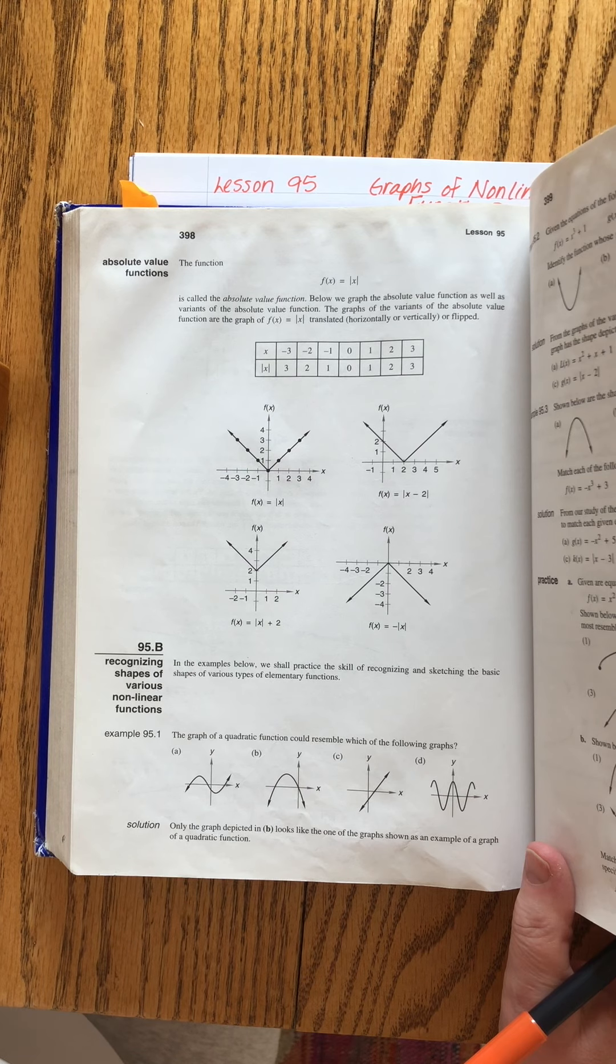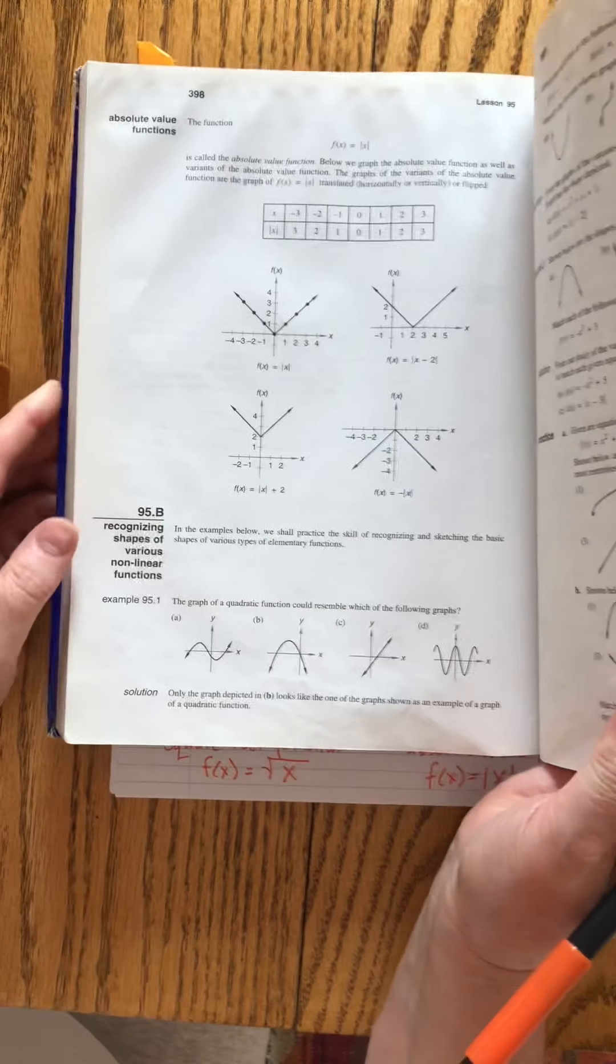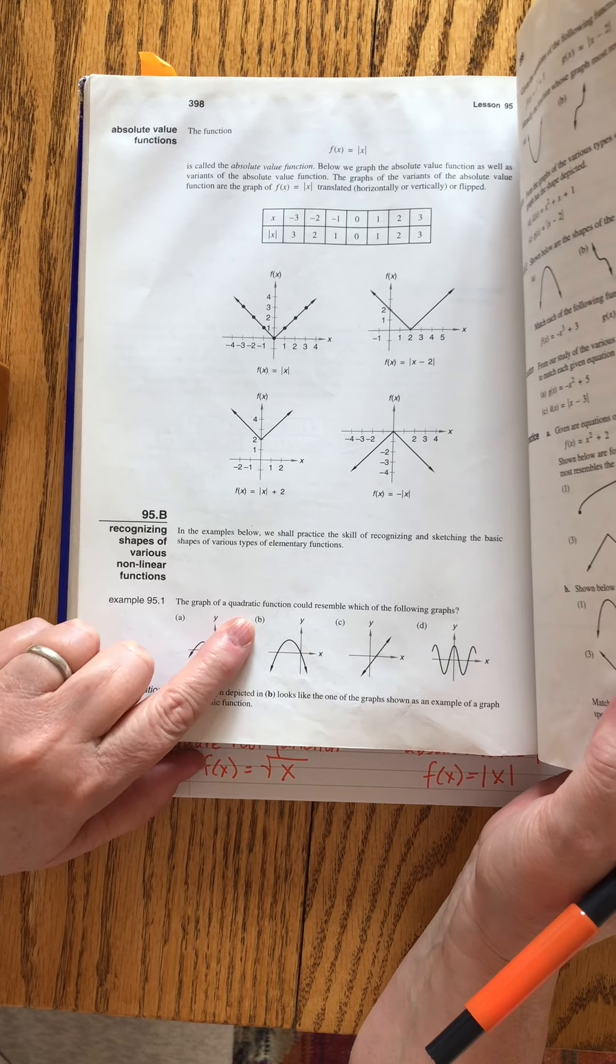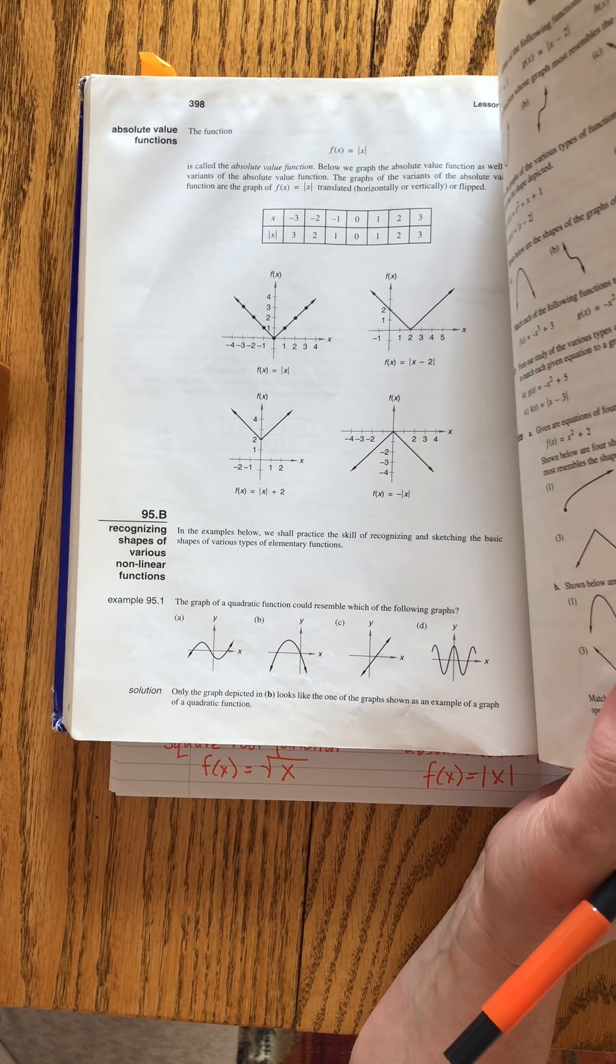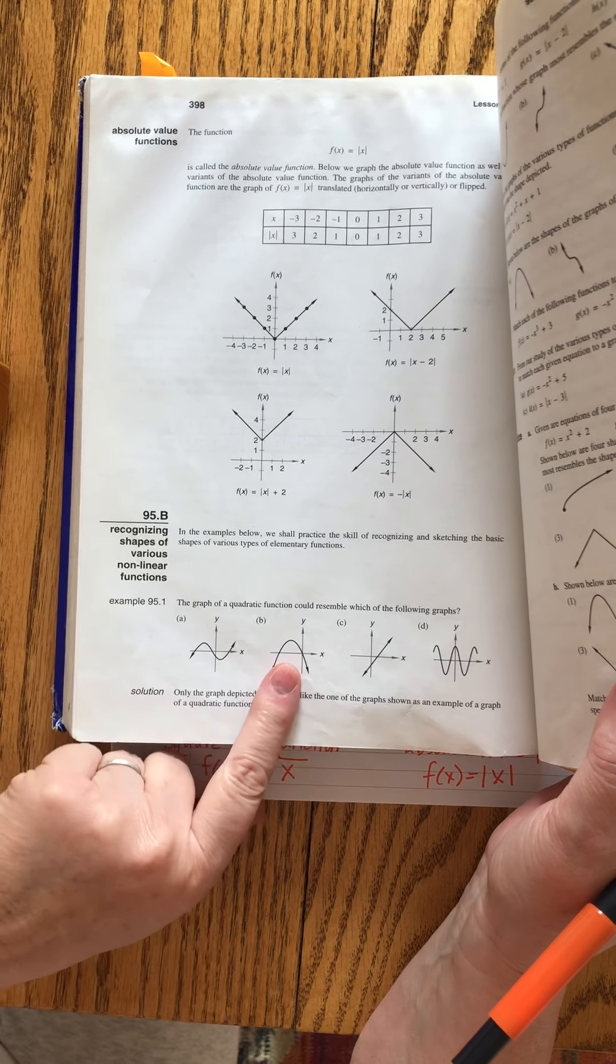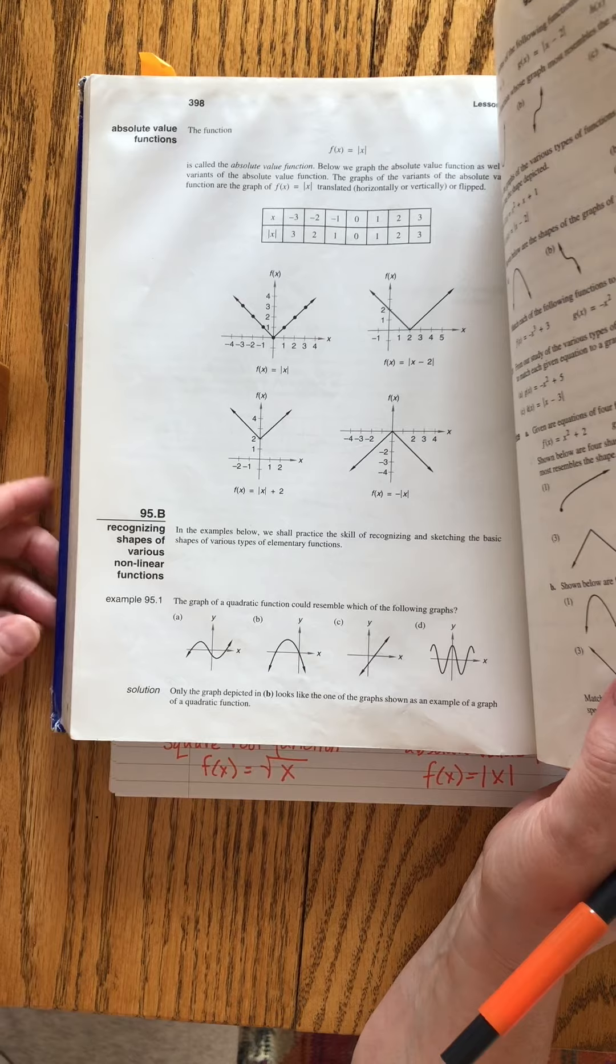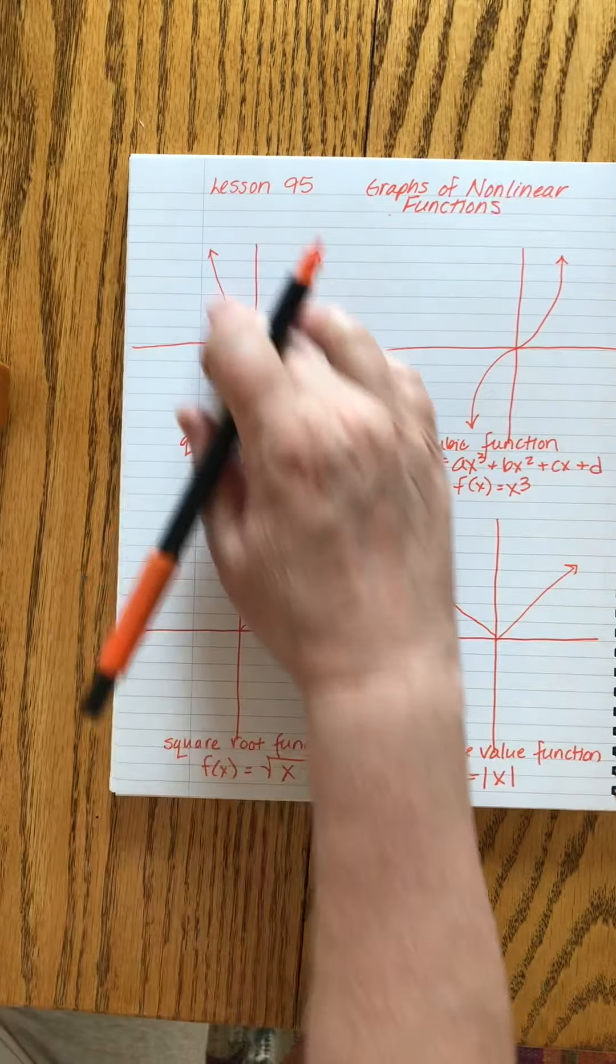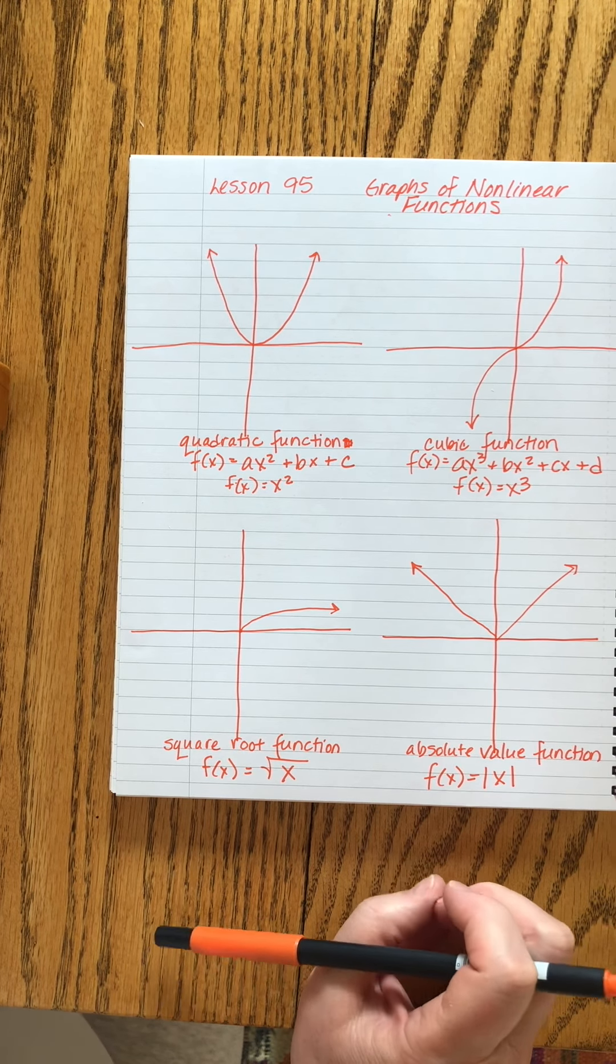That's what John wants us to do, is he wants us to start recognizing the shapes. And so he gives us problems like this. He says the graph of a quadratic function could resemble which of the following? Okay, so then we have to think, okay, quadratic. That's the one where the biggest term is a squared. That is the parabola shape, the whoop. It's this one. It's B. Only graph B looks like the one shown. Okay? So you can refer to your notes. It was this shape. Okay? That was the first problem.